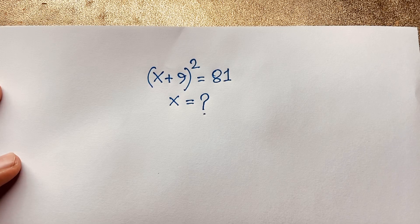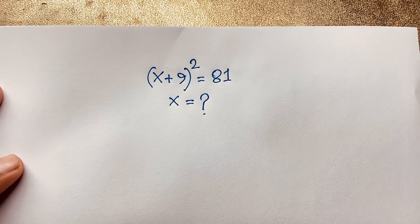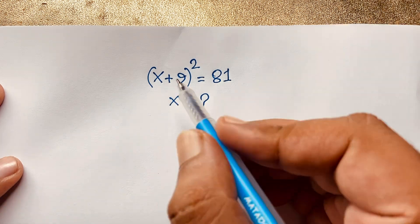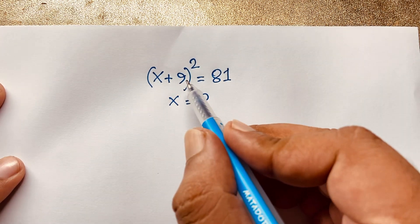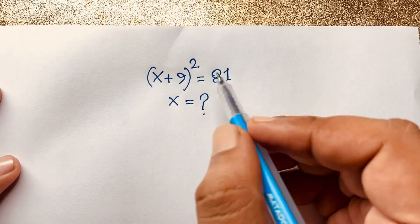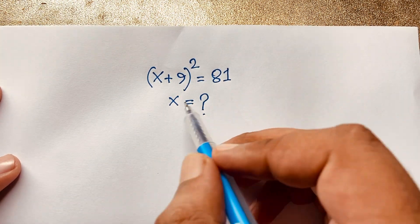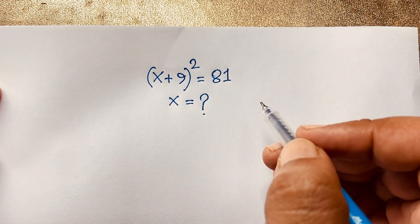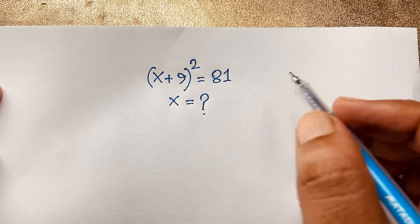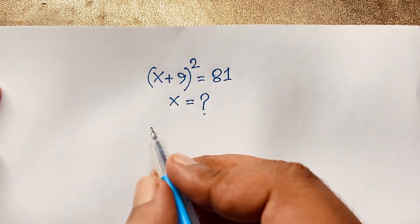Hello everyone, welcome to Raster's Classroom. Today we'll solve an interesting easy math problem, which is (x + 9)² = 81. x is equal to what? How to simplify this easy math question?